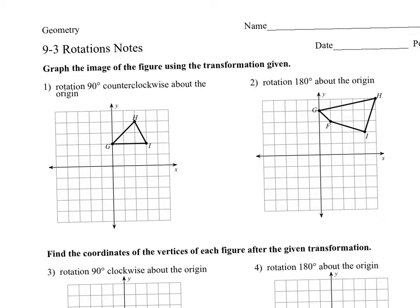So we've got a rotation 90 degrees counterclockwise. Counterclockwise is that direction about the origin. Now the origin is important. So when you take a point and you rotate it 90 degrees, basically what you're doing is you're making a perpendicular line. What we're doing is we're trying to move that point 90 degrees in that direction.